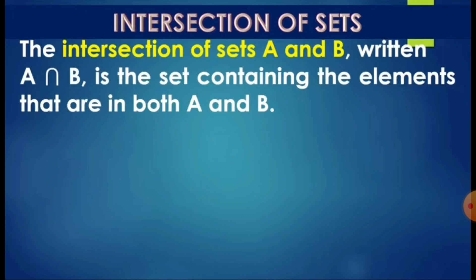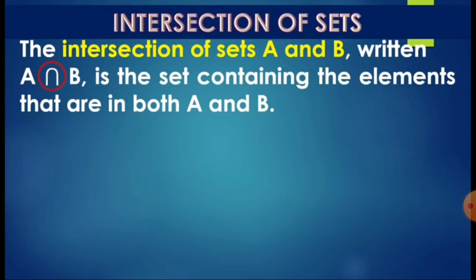So the first set operation, we have the intersection of sets. What is intersection of sets? The intersection of set A and B is written with this symbol — like an inverted U. That's the symbol of the intersection. It's the set containing the elements that are in both A and B, which means they have common elements. Remember the word 'both.'